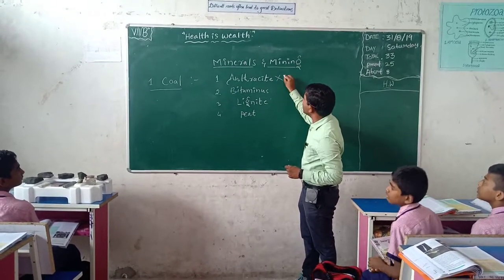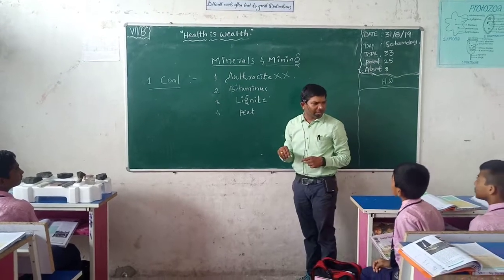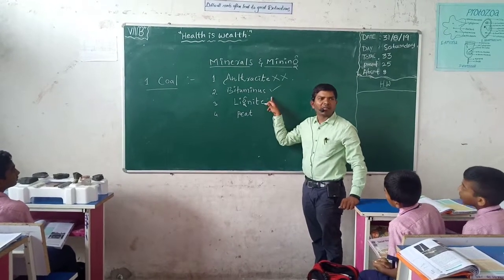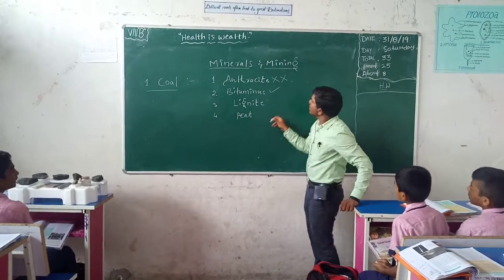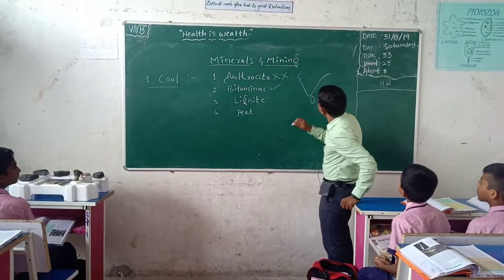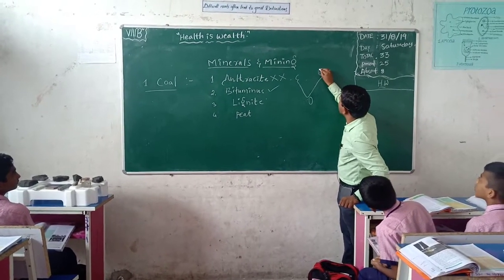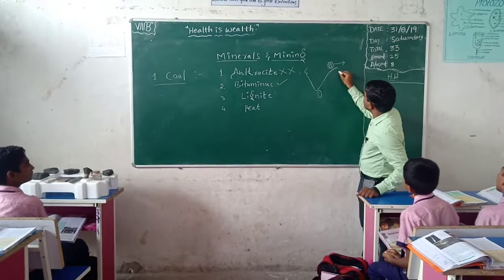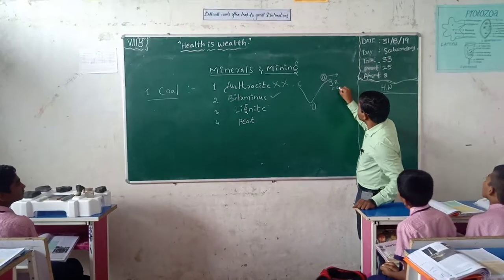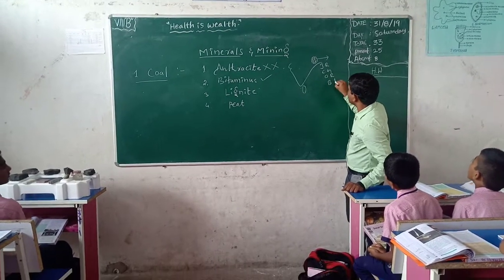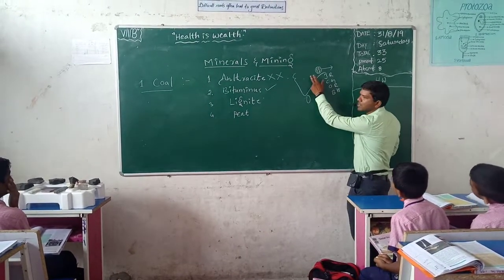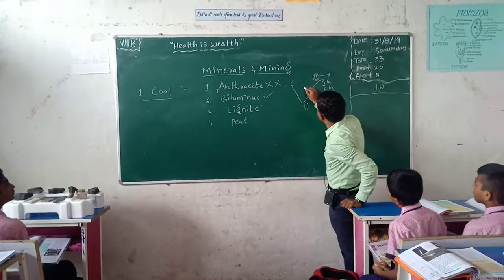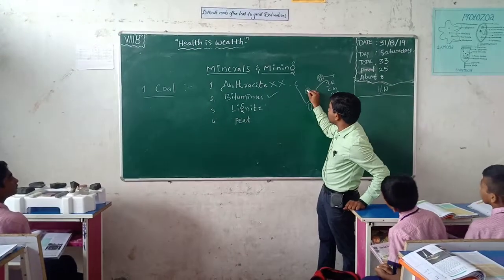Anthracite coal is not available in India. Bituminous coal is available in Telangana. This coal is mostly available in the Chotanagpur region — the heart of India. That includes Jharkhand, Chhattisgarh, Odisha, and Bihar. In these four states, most of the mineral resources are available. In Telangana region also, this bituminous coal is available.